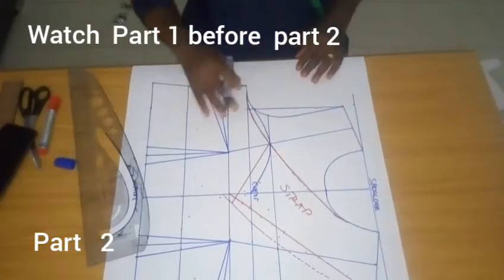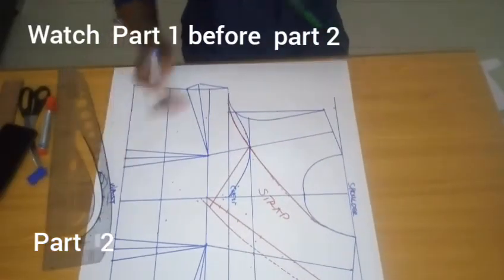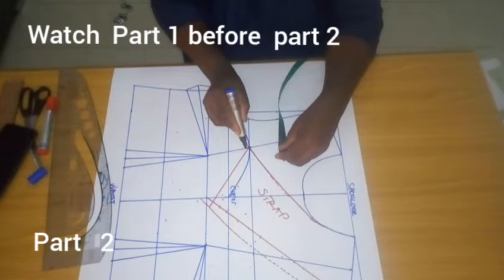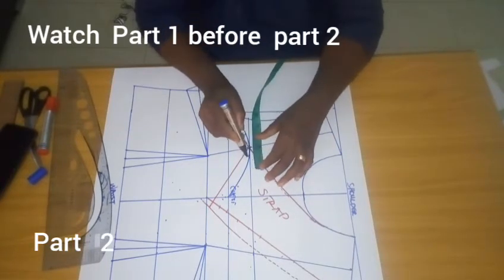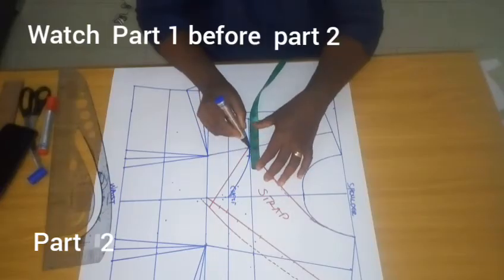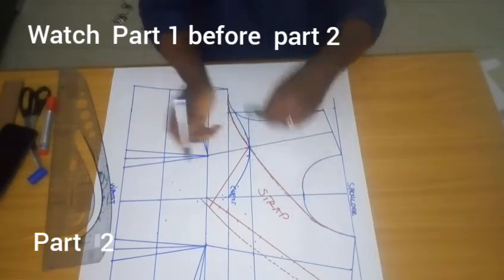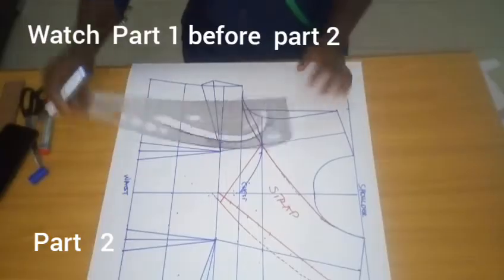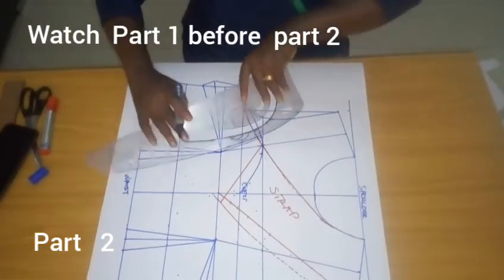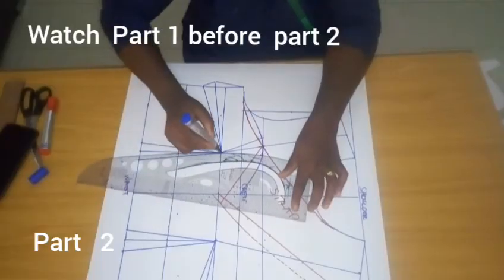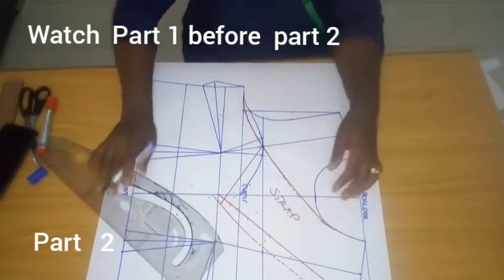So that is the bustier, and here on this line and on this line, that is the contour line. So from here to here I go in by 0.75, and from here to here I come out by 0.75, and I'm going to blend my bustier line. So I've blended my bustier line.